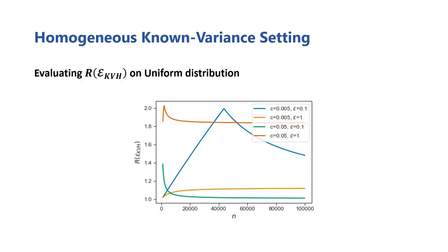To better understand the practical performance of the KVH estimator, we evaluate its relative improvement expression in the scenario where the Laplace mechanism is used to ensure privacy and where all users' data is drawn from the uniform distribution. In this plot, we evaluate the estimator's relative improvement plotted across a range of the total number of users n, TCM opt-in fraction c, and privacy values epsilon. The results are varied, but we see that our mathematical analyses are supported, since the improvement is always bounded between 1 and 2.3, with some values nearing both those extremes.